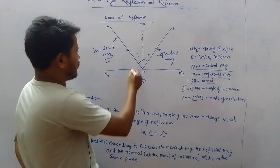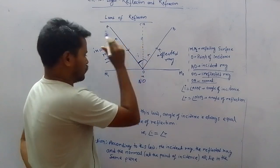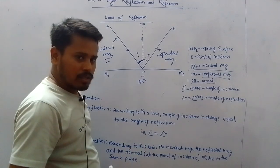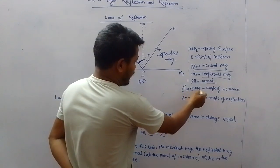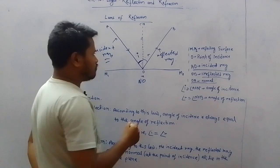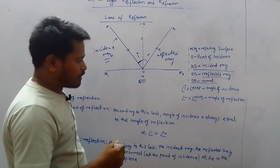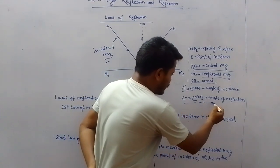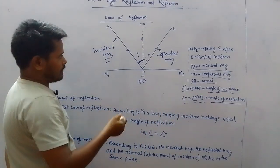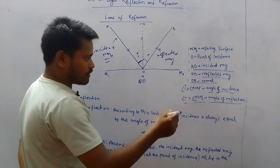Here you can see an angle made between the incident ray and the normal NO. This angle is denoted by the letter I and is known as the angle of incidence. So angle I equals angle AON. Similarly, another angle is made between the reflected ray and the normal NO. This angle is known as the angle of reflection, denoted by R, where angle R equals angle NOB.